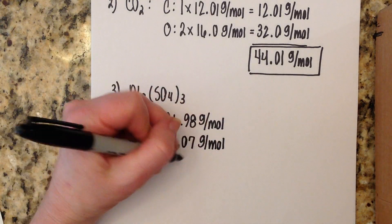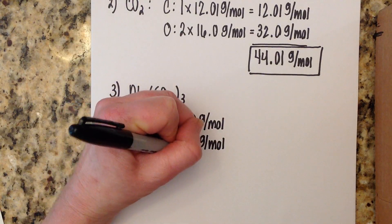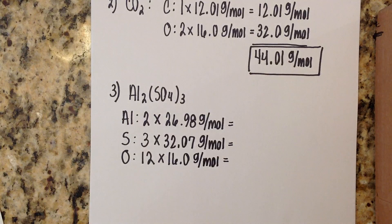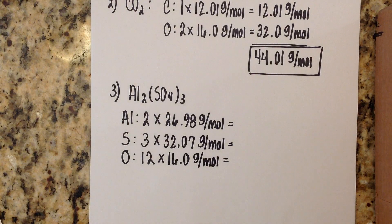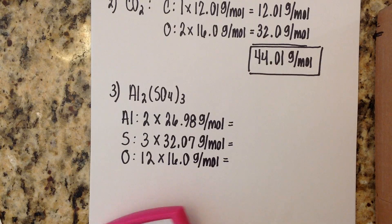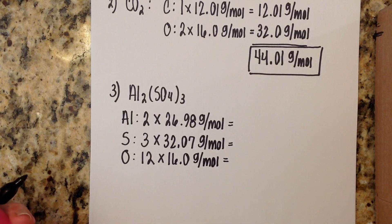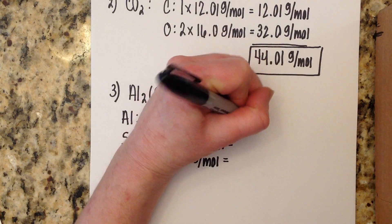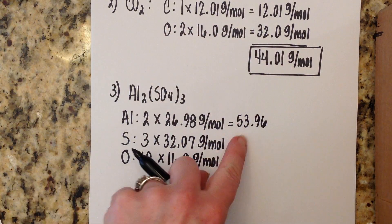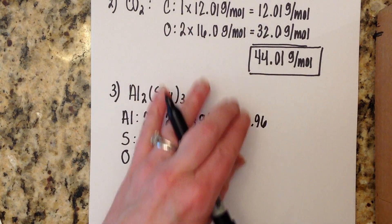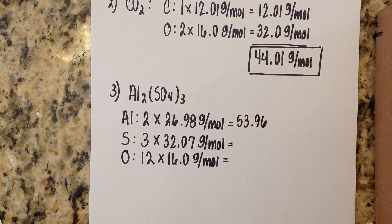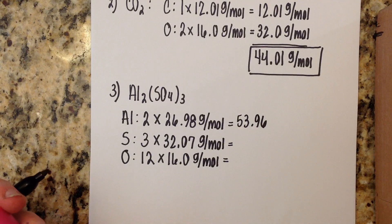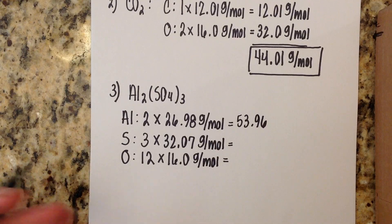And the molar mass of oxygen we all know is 16.0 grams per mole. So now we're going to multiply all these together, start totaling these things up. So 26.98 times 2 is going to be 53.96. Now we all know this is grams per mole, but this is kind of just where I'm doing a little bit of scratch work, so I'm just going to have numbers here, but technically do know that's grams per mole. Then we have 32.07 times 3, which is 96.21.